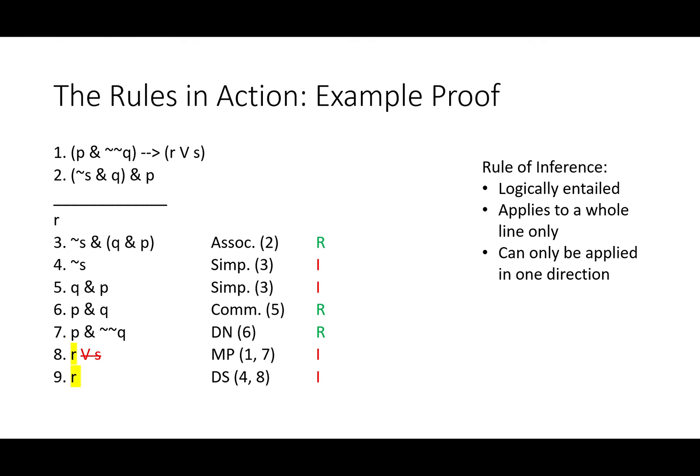This is a rule of inference. It's logically entailed. Here it applies only to the whole line. We would not be able to apply it to line one because we don't know if that disjunction is true or not when it's sitting there in the consequent of a conditional. We can only apply it once the V is the main connective of the line.